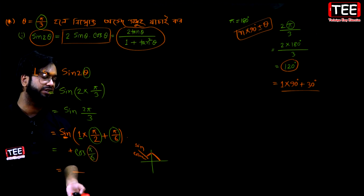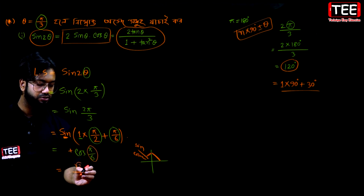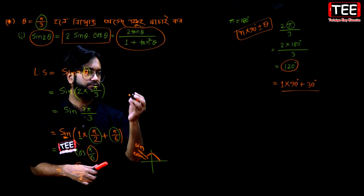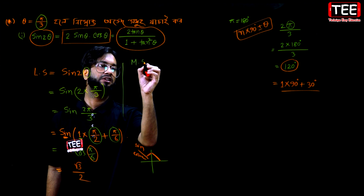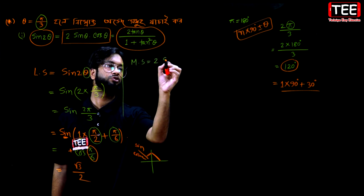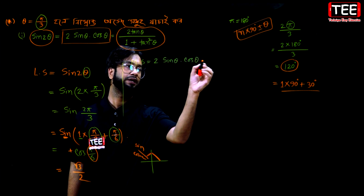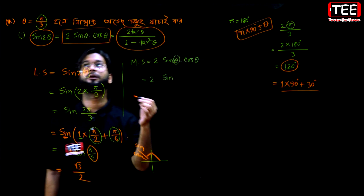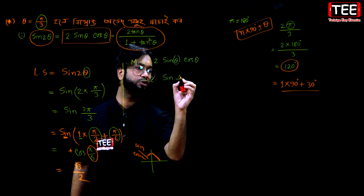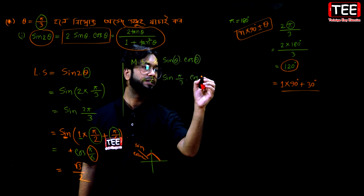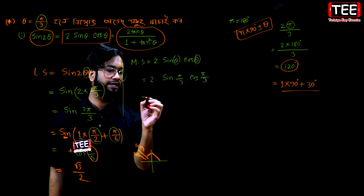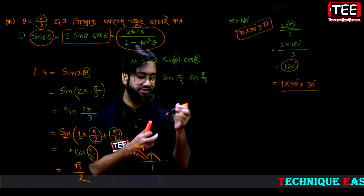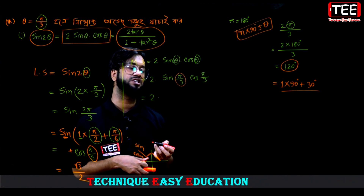cos 30 degrees is √3/2. So you can do the left side. Let's go to the middle side. So 2 sinθ cosθ — with θ equal to π/3, both times: 2 sin(π/3) cos(π/3).